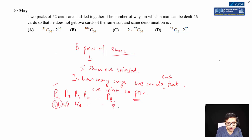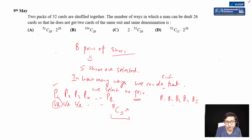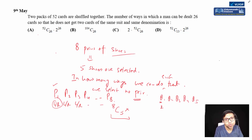I have eight pairs. First, I choose 5 pairs from the 8. Now, for each pair, I can choose either the left shoe or the right shoe — that gives two ways per pair using the fundamental principle of counting.